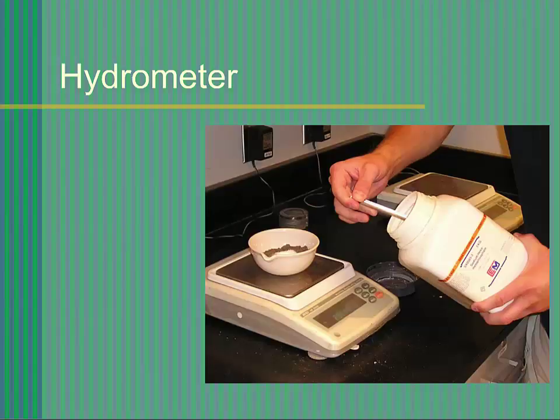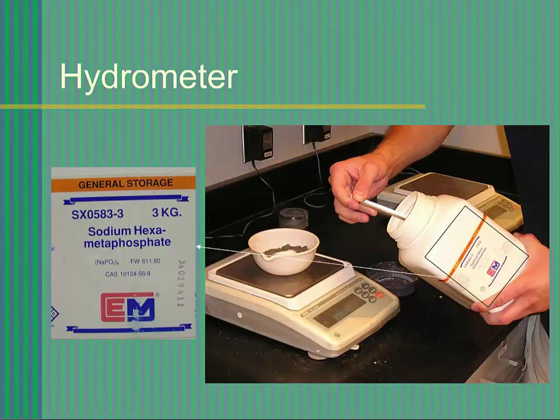To prevent individual soil particles from flocculating together, a small amount of an electrolyte known as a dispersing agent is added to the suspension. It has been found that polyphosphate compounds are generally the most effective dispersing agent. In your case, 5 grams of sodium hexametaphosphate is added to the sample.